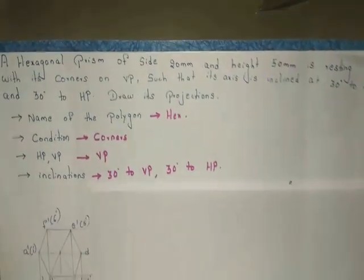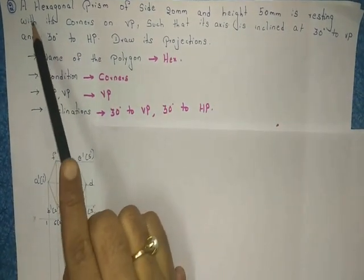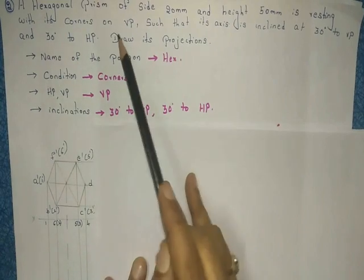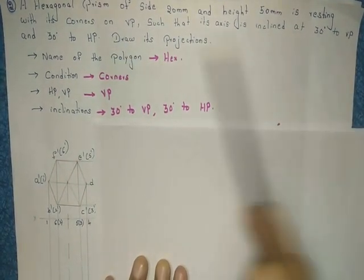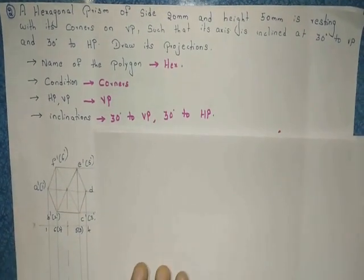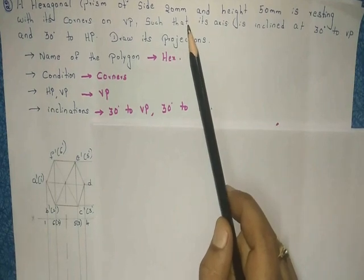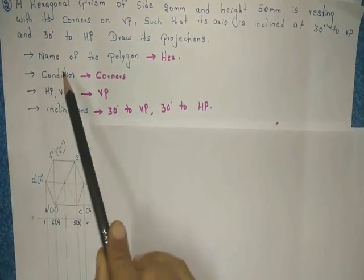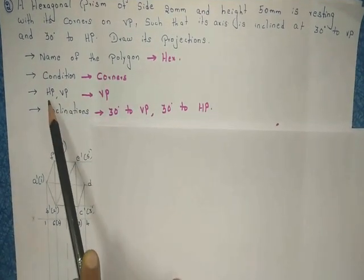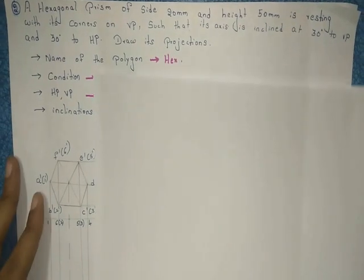Now coming to Question 2: a hexagonal prism of side 20 mm and height 50 mm is resting with its corners on VP such that its axis is inclined at 30 degrees to VP and 30 degrees to HP — draw its projections. As I mentioned in Lecture 1, every question will mention four important points: the name of the polygon, the condition, where to start the problem (HP or VP), and the inclinations.